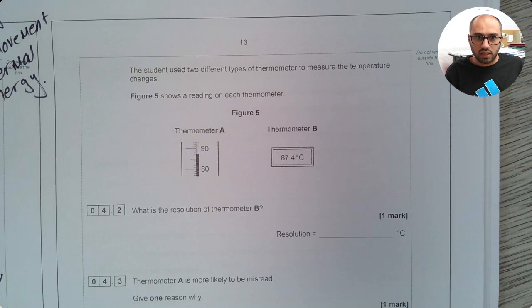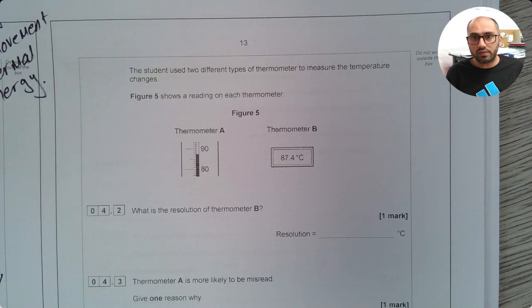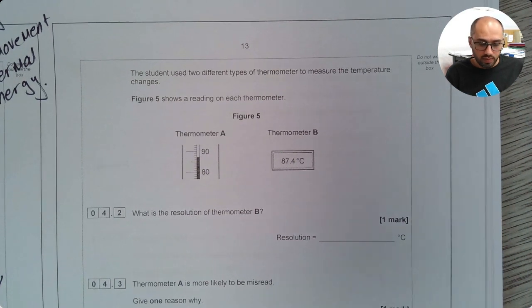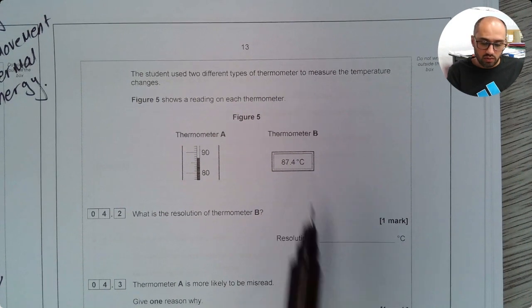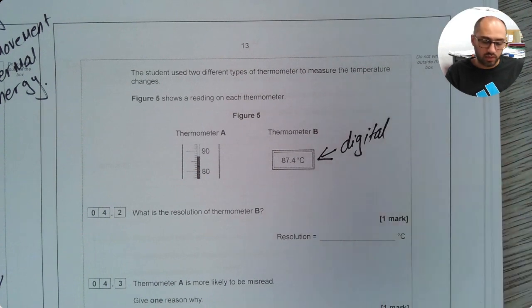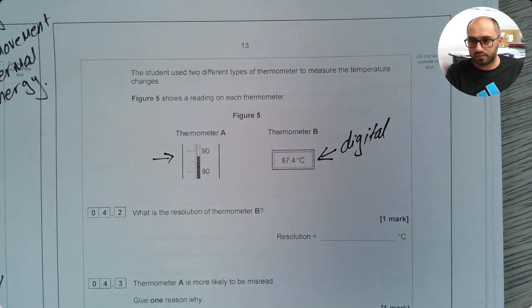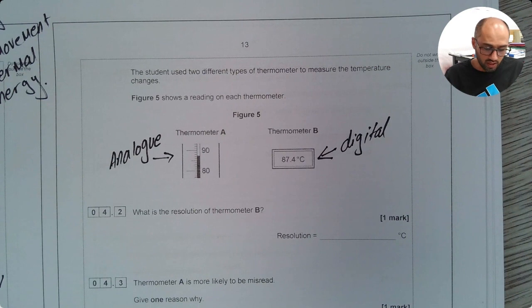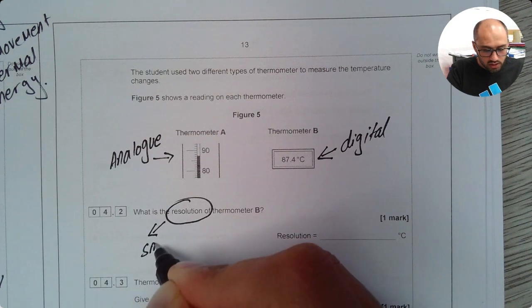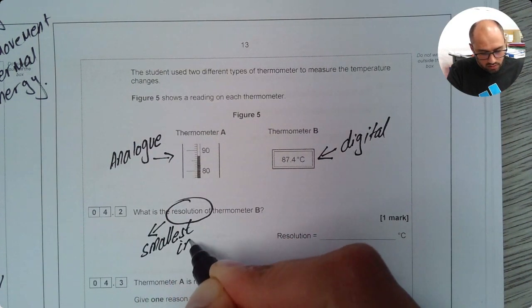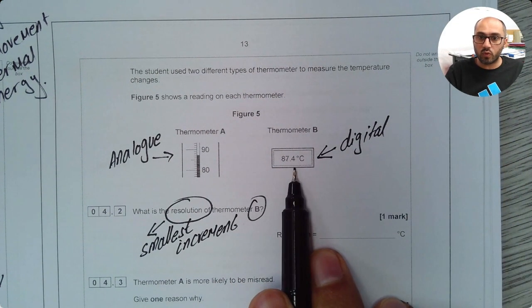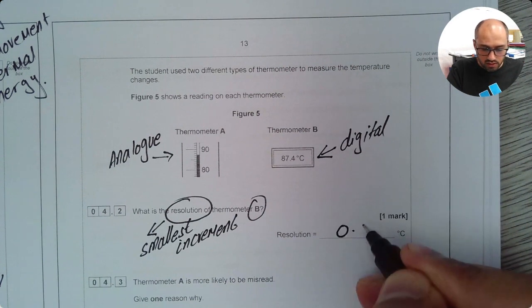It then further tells us that the student used two different types of thermometer to measure the temperature changes. Figure 5 shows a reading on each thermometer. We've been given thermometer A and a thermometer B. Now you need to remember this is my digital thermometer, but this one is analog. This was the resolution of thermometer B. Resolution means smallest increment. So if I look at B the reading will go up in point ones. I can say the resolution is 0.1.